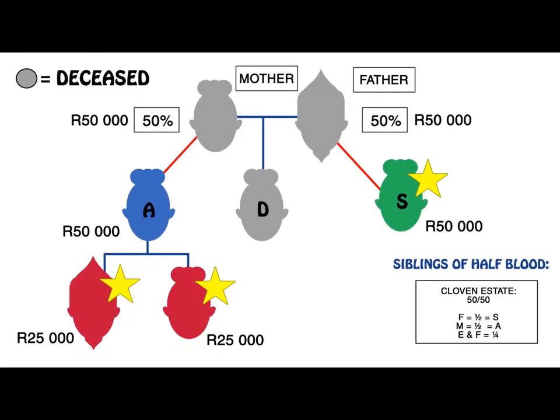Let's look at an example where we have descendants who are only related to one parent. D's estate is worth R100,000. D's mother and father predeceased him. He is survived by his half-sister A on his mother's side and his half-sister S on his father's side. Each parent would therefore get R50,000. As they have predeceased D, A will inherit the mother's portion through representation and S will inherit the father's portion through representation. Should A have also predeceased D, then her portion will be divided amongst her children through representation.